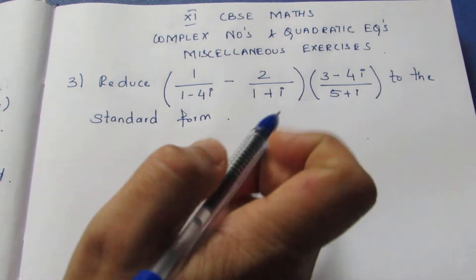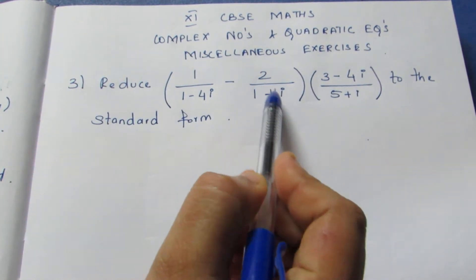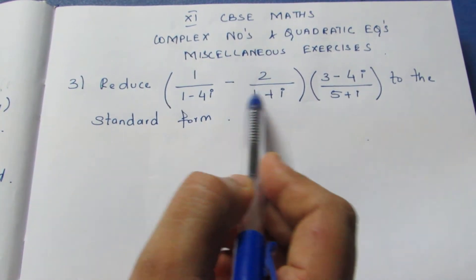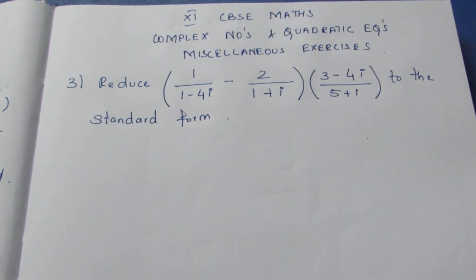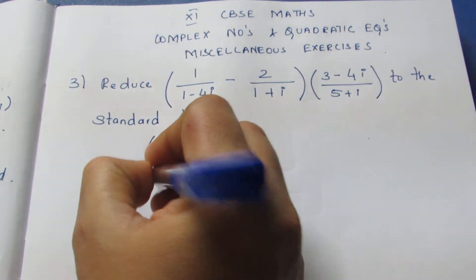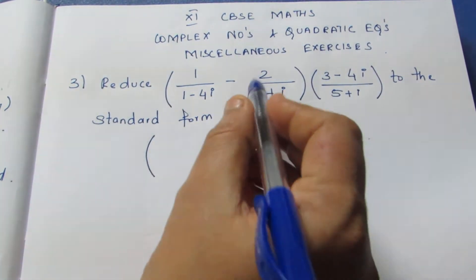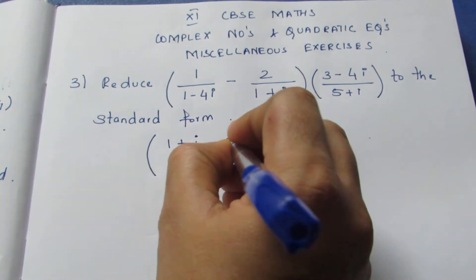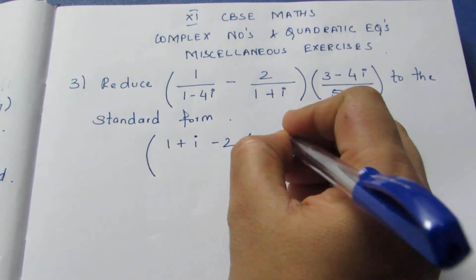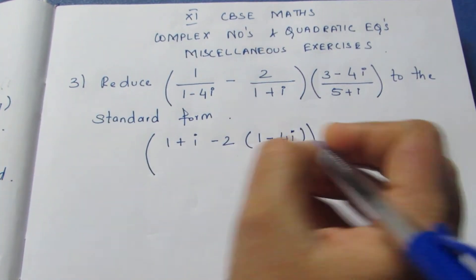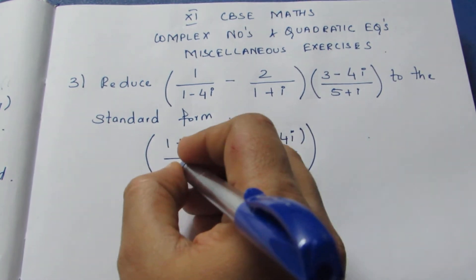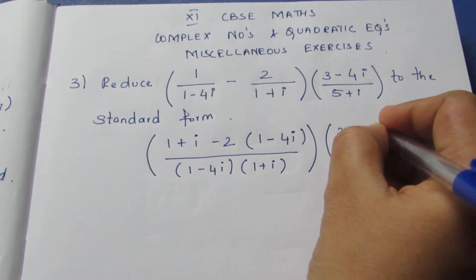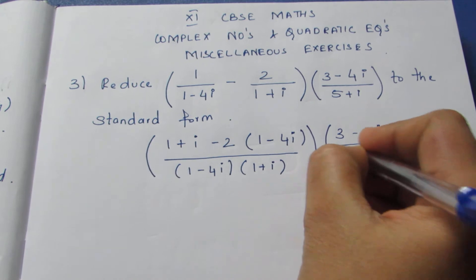In the first bracket it is given as 1/(1−4i) minus 2/(1+i). We need to take LCM — for the numerator just cross multiply it, and for the denominator multiply both since they are not the same. So taking LCM, for the numerator we multiply with 1 to get the same value, and with −2 we need to multiply the other term. By the denominator, multiply both — it becomes (1−4i)(1+i).